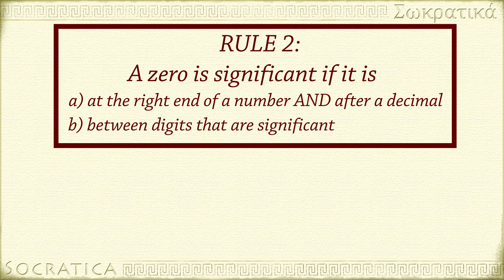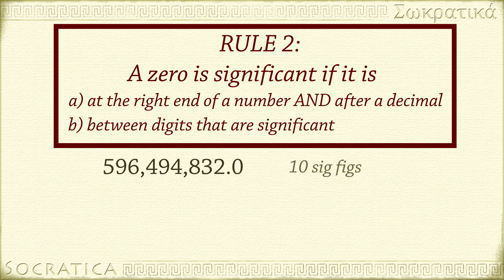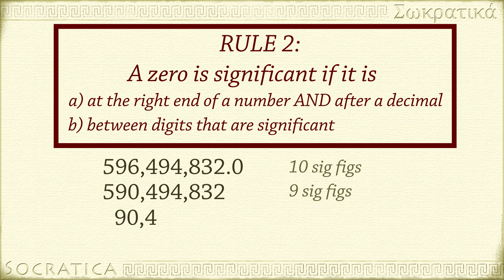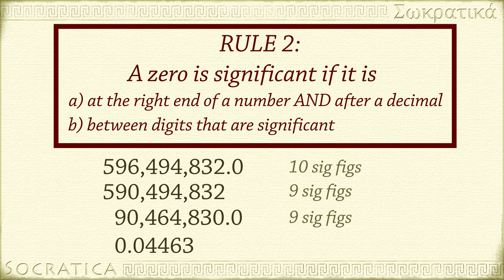Let's see more examples of rule 2. 596,494,832.0 has 10 significant figures. If the number was 590,494,832, there are 9 significant figures. Same with 90,464,830.0 — remember, as long as the zero is between two significant figures, it counts as significant. But in 0.04463, there are four significant figures; the zeros to the left of the non-zero digits are not significant.